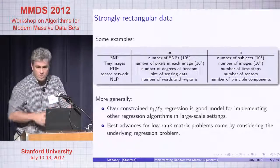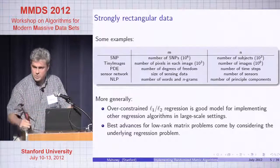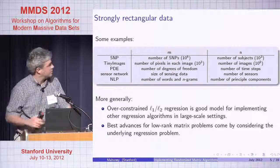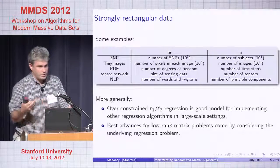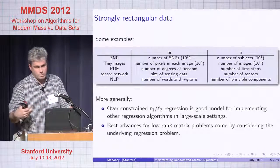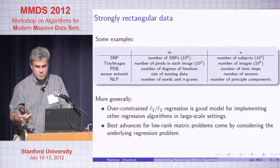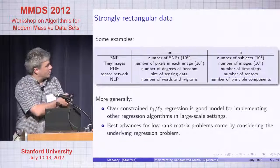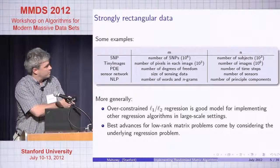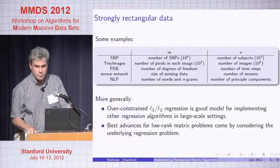L2 basically involves QR, eigenvectors, and things that are bread and butter for matrix completion methods. L1 involves optimization. And importantly, looking at the history of randomized matrix algorithms, the best advances for low-rank problems came by considering the underlying regression problem.